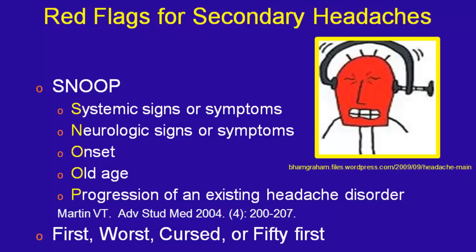There's also the mnemonic SNOOP from more recent publications. S for systemic signs or symptoms. N for neurological signs or symptoms. O for onset — usually a thunderclap headache. O for old age, meaning over fifty. And P for progression of an existing headache disorder — if someone has had migraines since age sixteen and they've suddenly changed character, you better start looking for something else. Pick whichever mnemonic you prefer. Those are the patients who need imaging.